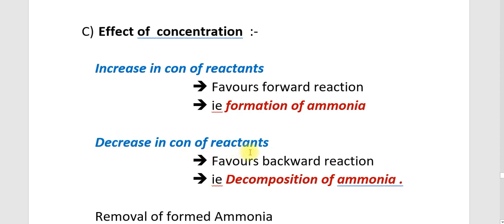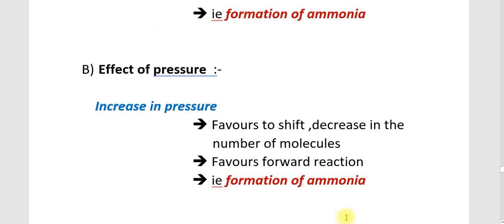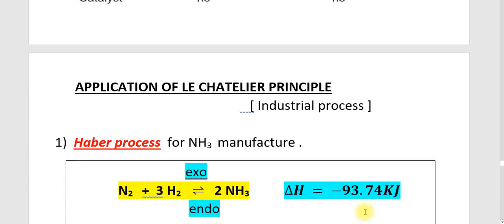A decrease in concentration of reactants favours the backward reaction — that is, decomposition of ammonia. If we already have ammonia formed and remove it, that means we are decreasing the concentration of the product. Therefore, the forward reaction will take place — that is, more formation of ammonia.